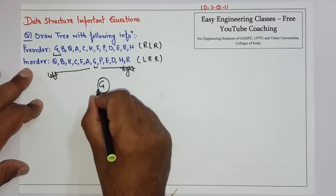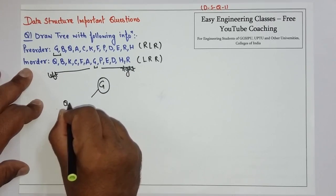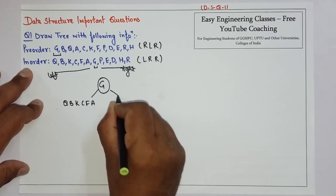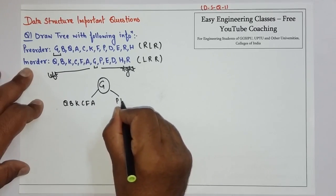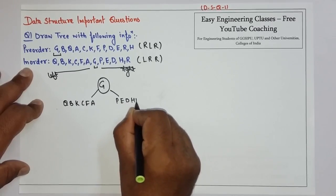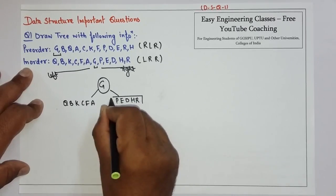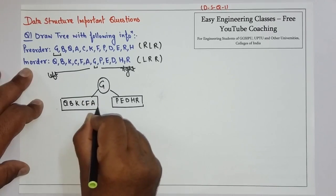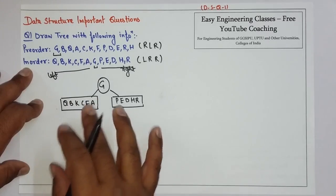So this will be like Q, B, K, C, F, and A on the left, and on the right P, E, D, H, and R. So this is the first step.